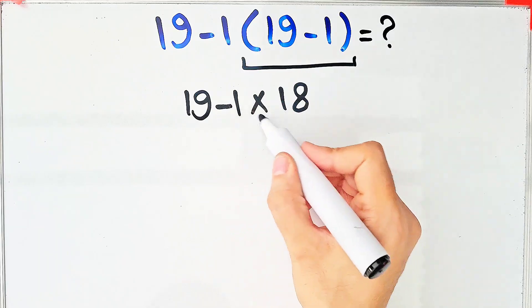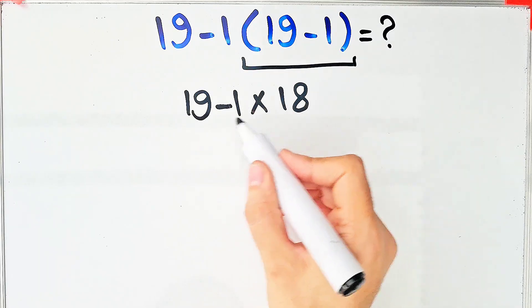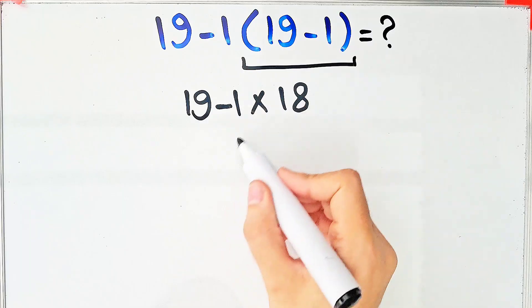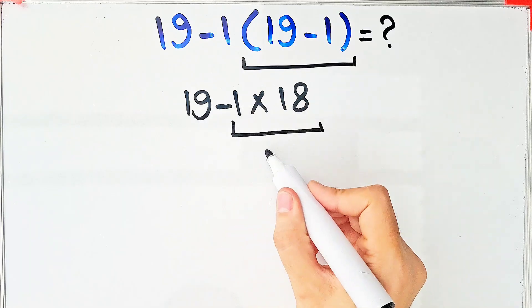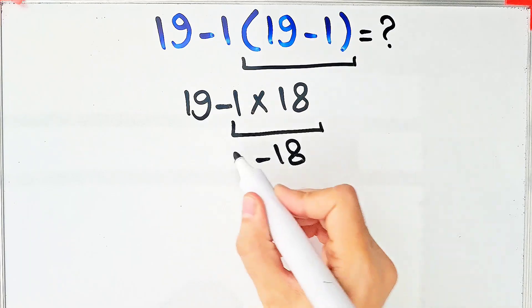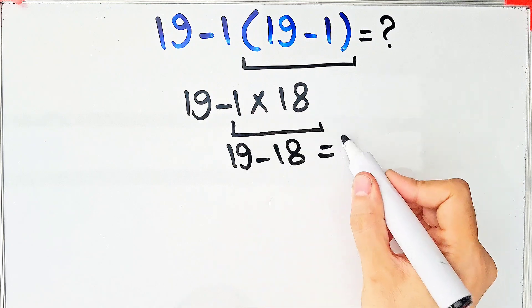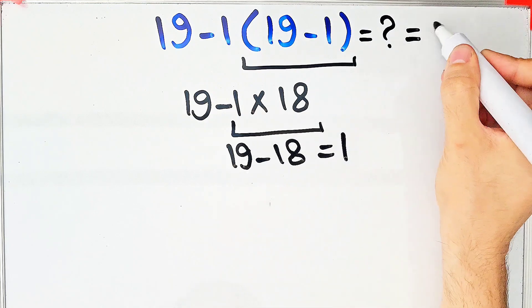We have subtraction and multiplication. First we do this multiplication. Negative 1 times 18 equals negative 18. And 19 minus 18 equals 1. The final answer of this question equals 1.